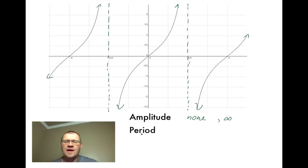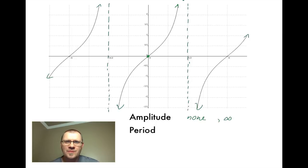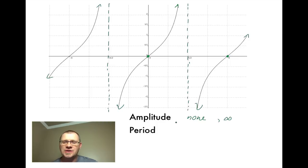The period length is how often it takes for the graph to start repeating itself. Here's the point at (0, 0) with the graph going up. The next time, moving to the right, that I get to (0, 0) with the graph going up is at pi. So whereas sine and cosine had a period of 2 pi, tan actually only has a period of pi.